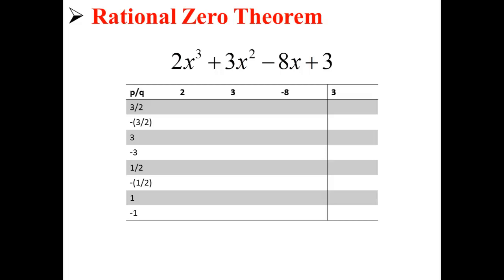We then perform synthetic division to obtain our remainders. Here, there is no remainder when dividing by negative 3, by 1 half, and by 1. So those are our three zeros.